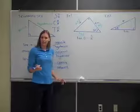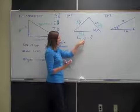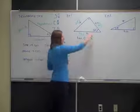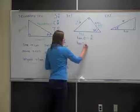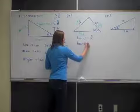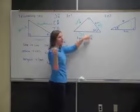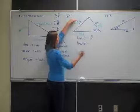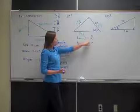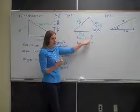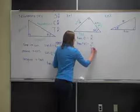Now fill in the information that you know. Theta is just the variable for the angle, so we put 50 in where there's theta. So the tangent of 50 degrees equals the opposite side — that's the unknown, so I'll put X for it — over the adjacent, which is 6 meters in the denominator.